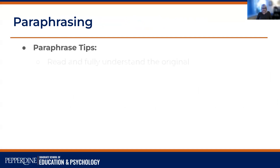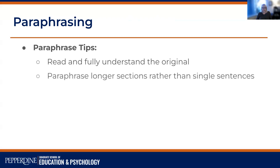So how do you paraphrase? Here are some tips. First, read and fully understand the original — it's very difficult to paraphrase something when you don't understand all the nuances of what the author is trying to say. Another suggestion that can help you avoid plagiarism or text that is too similar to the original is to paraphrase longer sections, like a paragraph, instead of a single sentence. Trying to do it one-to-one by creating synonyms can result in patch writing, where it's really too similar to the original, so paraphrasing longer sections often helps avoid that problem.